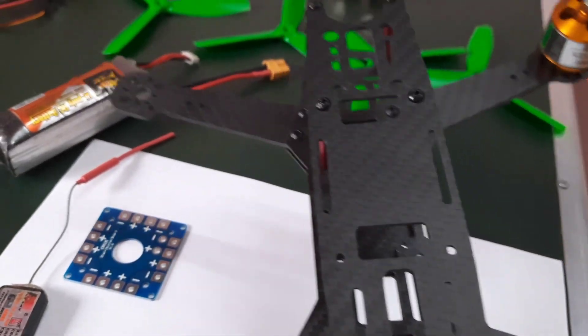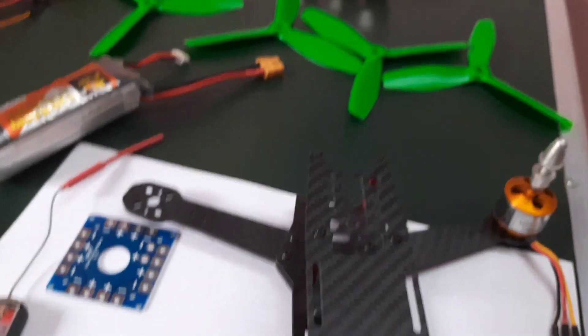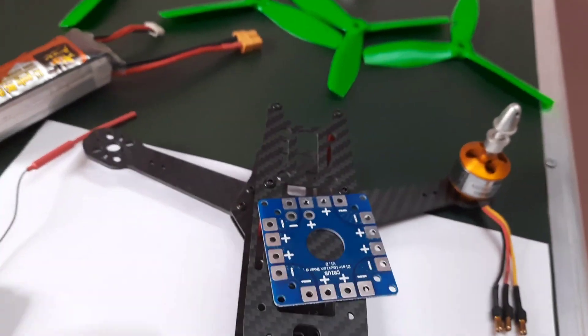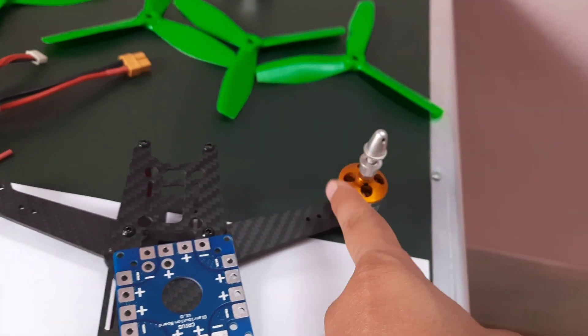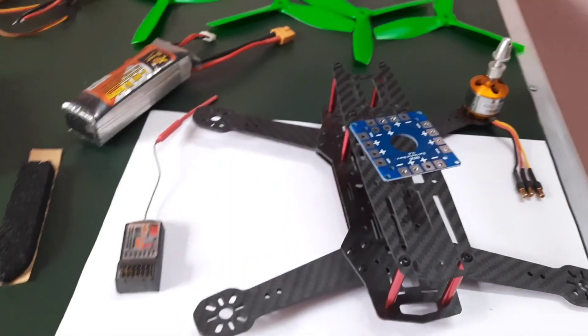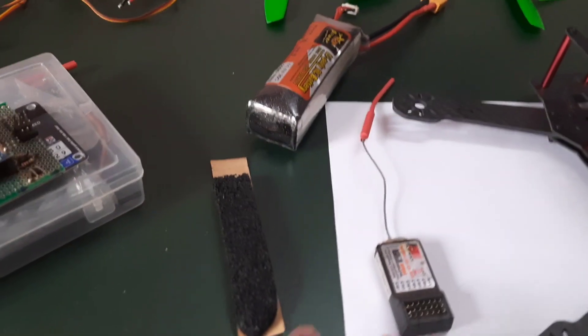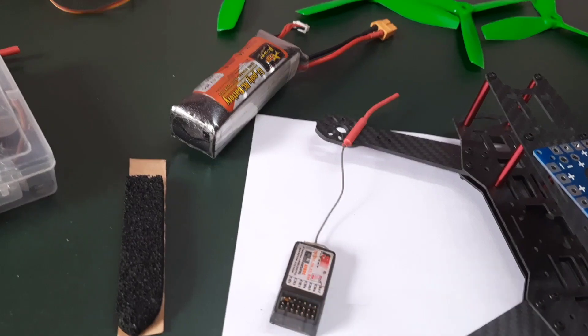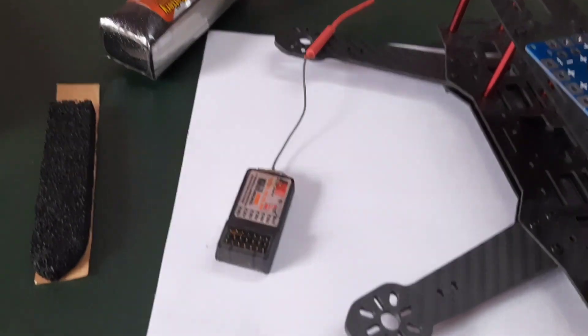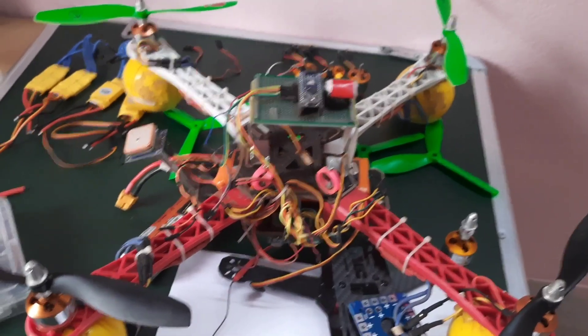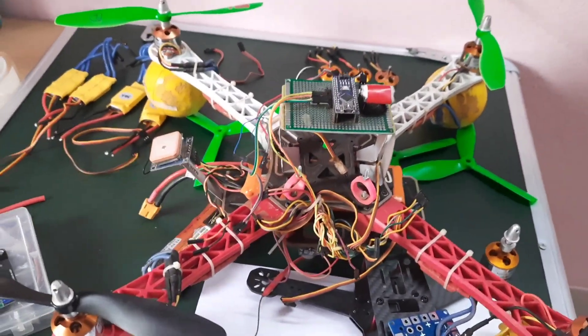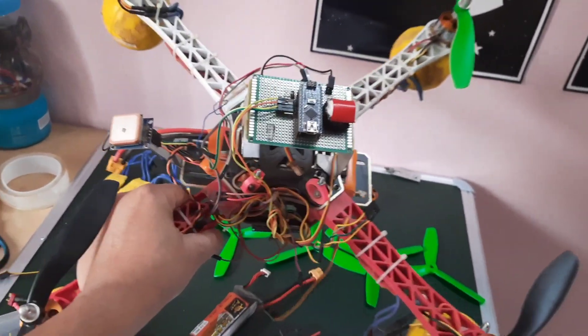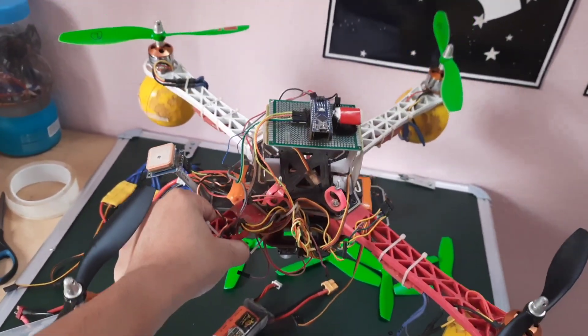The weight is just 160 grams along with this power distribution board. So you can imagine it's quite light. Right now one of the motors is bolted already. I'll come to that. I'll be using my radio receiver - this is the receiver I have been using in my previous drone.